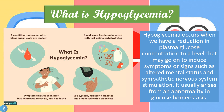From this definition we get that hypoglycemia is a condition that occurs when the blood sugar levels are too low. Some of the symptoms that may occur are altered mental status, shakiness, fast heartbeat, sweating and headache. It is usually related to patients who suffer from diabetes or an abnormality in glucose homeostasis. The blood sugar levels can be raised with fast-acting carbohydrates.